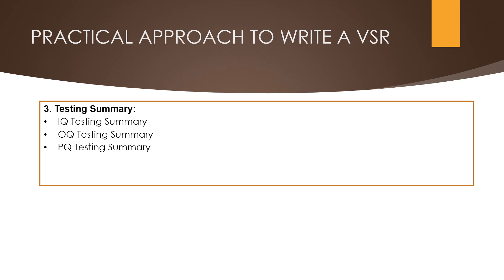Next is the OQ testing summary. Here we need to define the start date and completion date of operational qualification, and the OQ acceptance criteria which meets as per the OQ testing. We also need to define the OQ status — brief details about the OQ protocol number, status of pass or fail, and if any discrepancy is observed, the reference number of that discrepancy.